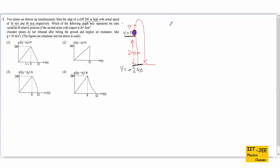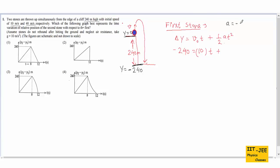Now we find the time taken by the first stone. For its vertical motion, using the formula delta y equals v0·t plus half·a·t², where delta y is the displacement. The displacement is minus 240. The initial speed of the first stone is 10 meters per second. Since the ball is thrown up, upward is positive, so acceleration is minus g, which equals minus 10 meters per second squared.